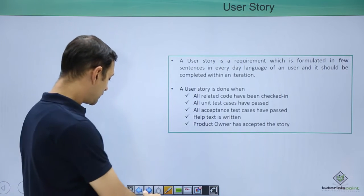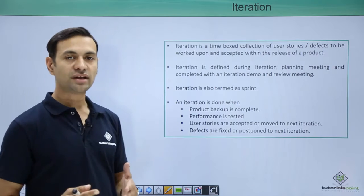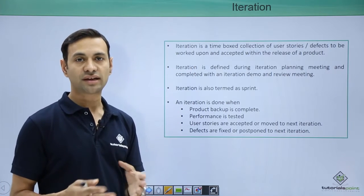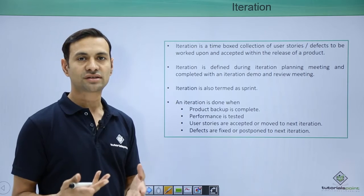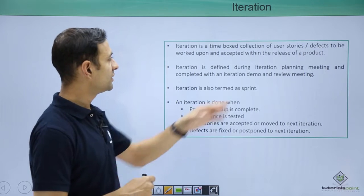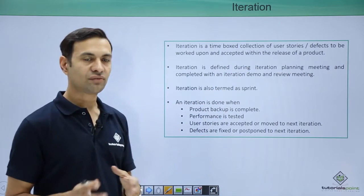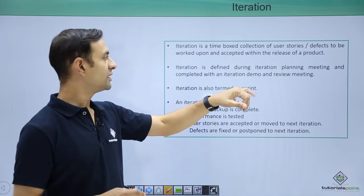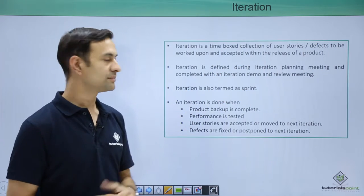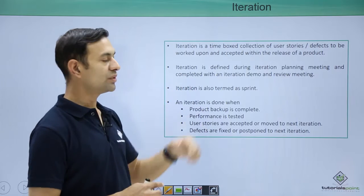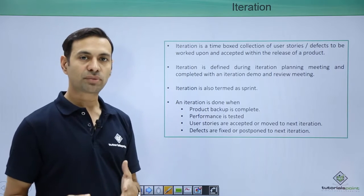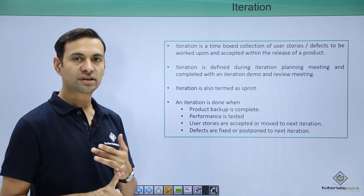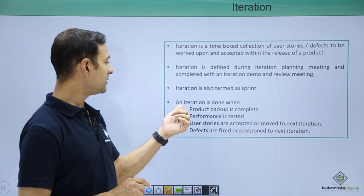Next is iteration. Let's see how to check whether an iteration is complete or not. An iteration is a time-boxed collection of user stories — normally 3 or 4 user stories or defects — which are to be fixed within a particular time frame so that our product gets released.